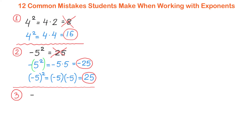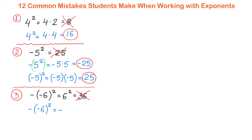In the next example, we have negative parenthesis negative 6 to the second power. Thinking that the two negatives make a positive and writing this as 6 squared, which is 36, would be a mistake. Instead, by the order of operations we perform the exponent first, so we bring the outer negative to the answer. Then negative 6 to the second power inside the parentheses is negative 6 times negative 6, which is positive 36, and with the negative in front gives us negative 36.